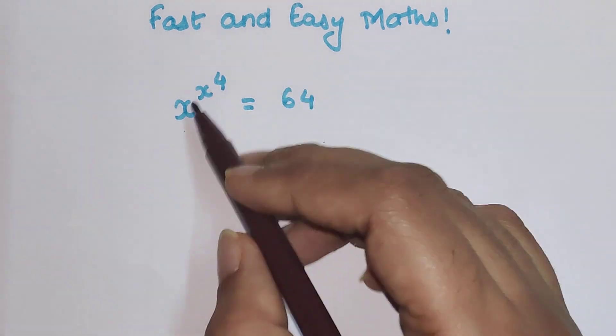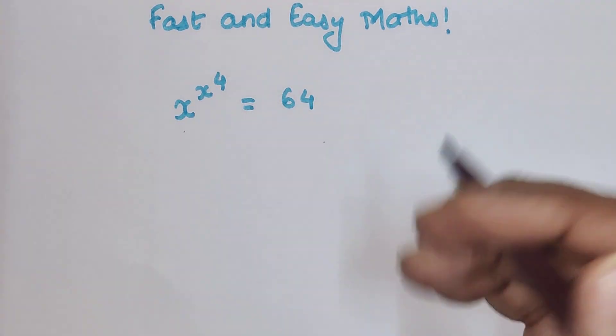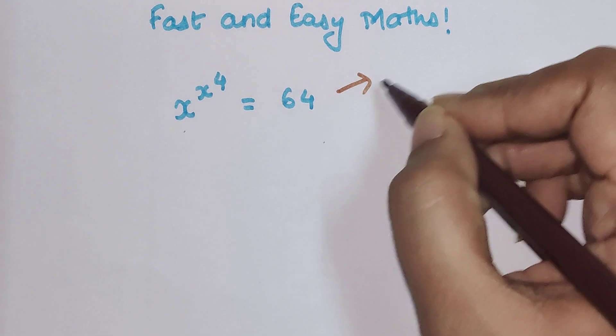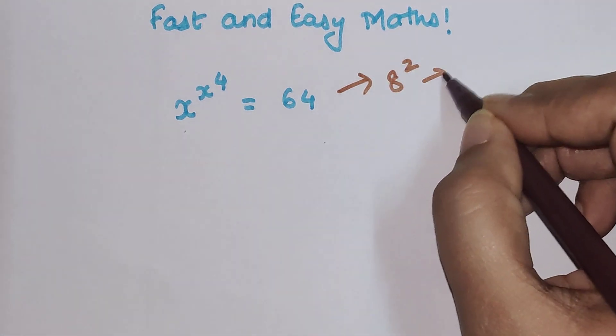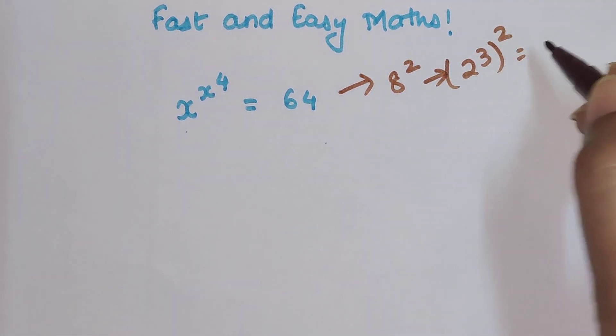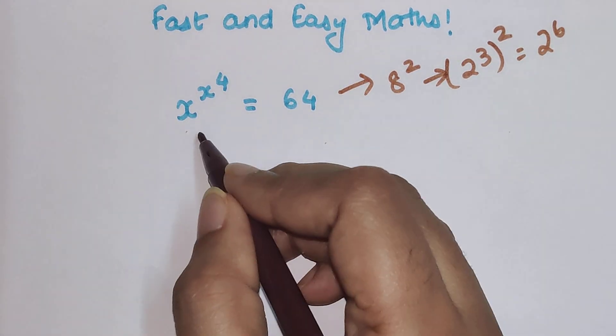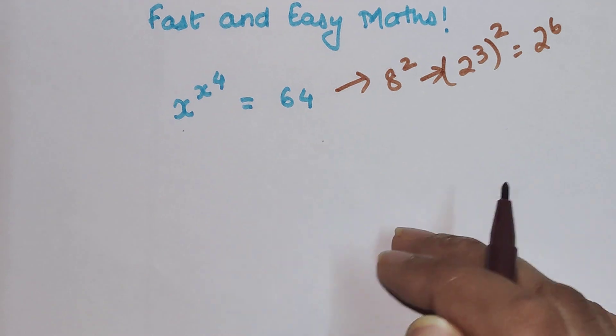So they thought, let's write this in terms of squares or cubes. They basically made this 8^2, and then 8^2 is (2^3)^2, so they're coming out to be 2^6. Now from here they could not continue. That is where they got stuck.